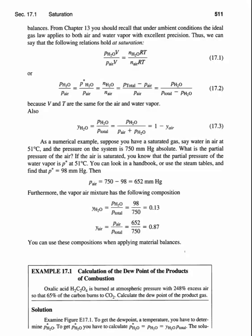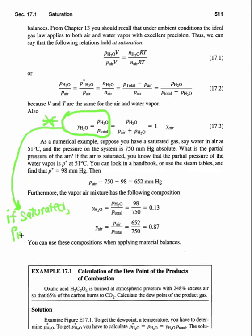Here are some ways to describe this mathematically. The key point is that the mole fraction of water vapor is equal to its partial pressure divided by the total pressure — that's true for any gas. When the system is saturated, the partial pressure of water equals the vapor pressure, which we indicate with a little asterisk, at whatever temperature you're at.